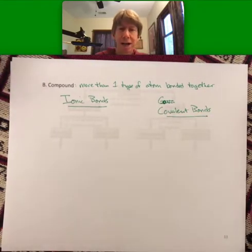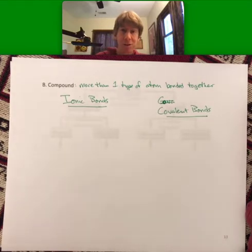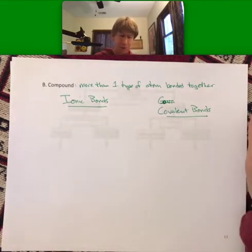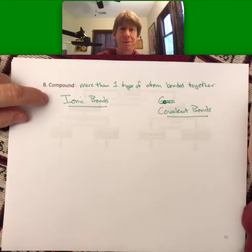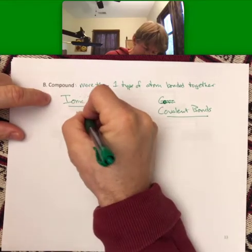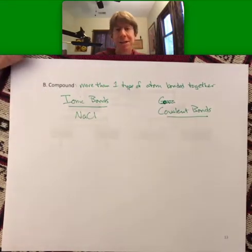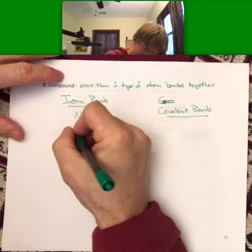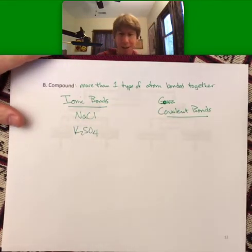We're not quite there yet, but I do want to draw the distinction as you fill in your knowledge and we move forward. Ionic bonds are going to be compounds like table salt, NaCl, and K2SO4, just as two examples.